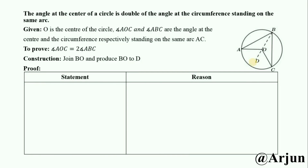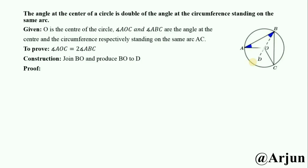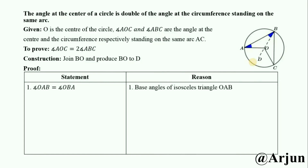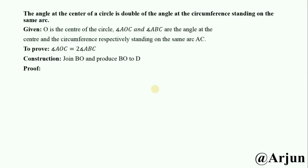Statement 1: Angle OAB equals angle OBA. The reason is that OA is a radius and OB is also a radius, so OA equals OB — radii of a circle are equal. Therefore, triangle OAB is an isosceles triangle, and these are the base angles of that isosceles triangle, so angle OAB equals angle OBA.